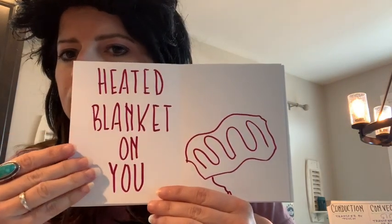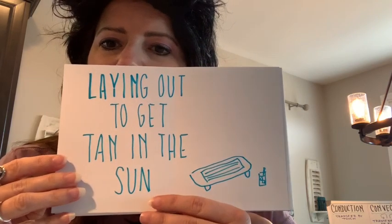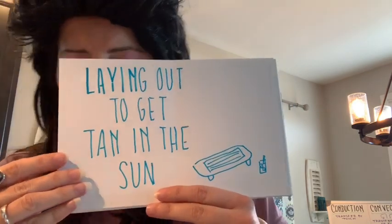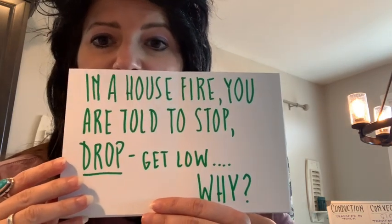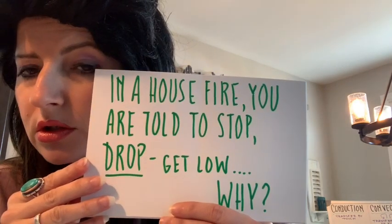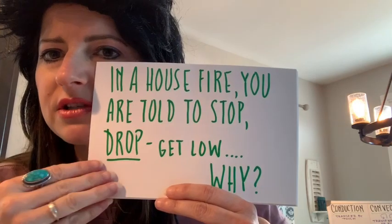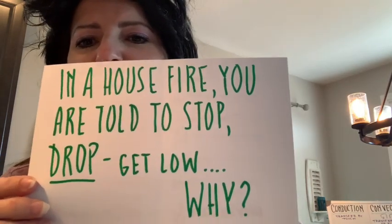How about if you get a heated blanket and put it on you? Direct contact — conduction. How about laying out in the sun to get a tan? Radiation. Now think about this: in a house fire you're told to get low to the ground because heat rises. Why are you told to drop to the ground? If you said convection, you're correct.